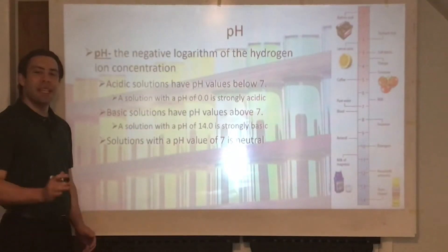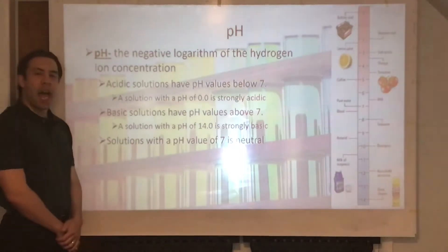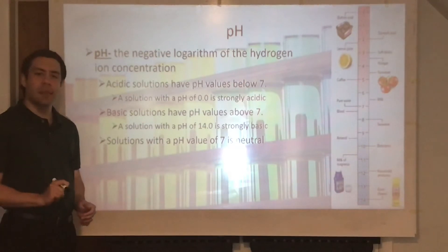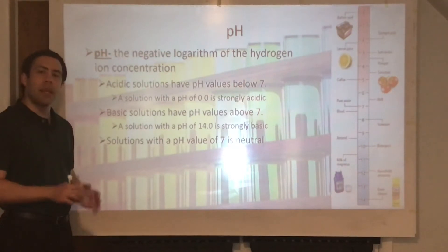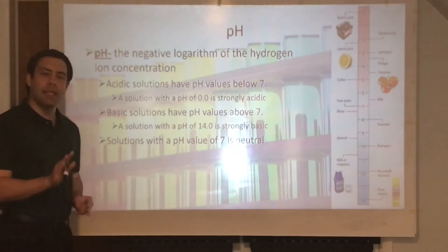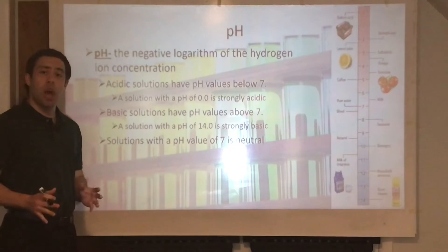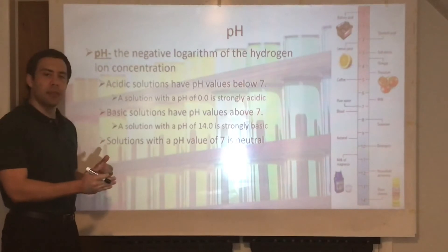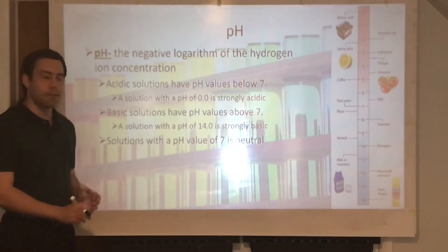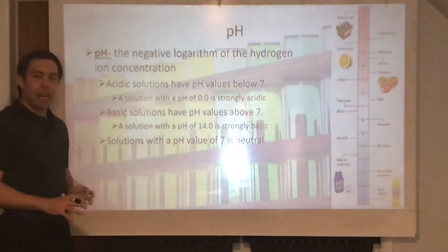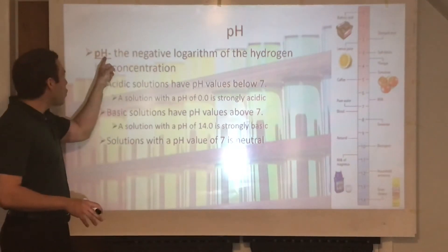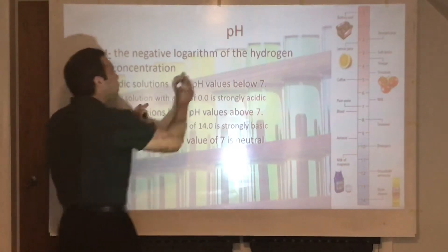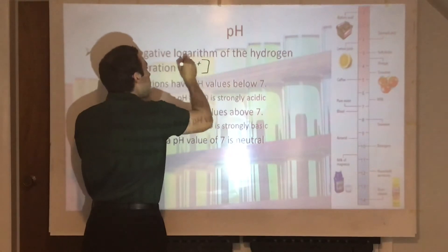pH is the negative logarithm of the hydrogen ion concentration. If you remember from Arrhenius' theory of acids and bases, an acid is a substance that, when dissolved in water, dissociates into H-plus ions. So, the more H-plus ions there are, the higher the concentration, the more acidic a substance is. The H in pH refers to the amount of hydrogen ions, or H-plus ions.